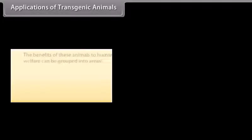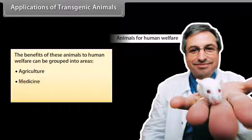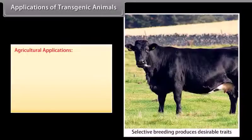Applications of transgenic animals. The benefits of these animals to human welfare can be grouped into three areas: agriculture, medicine, and industry.